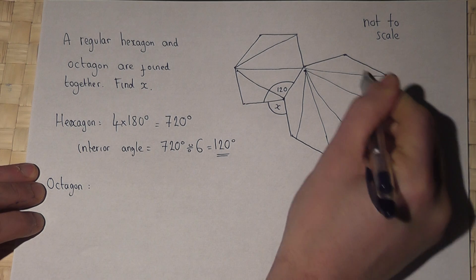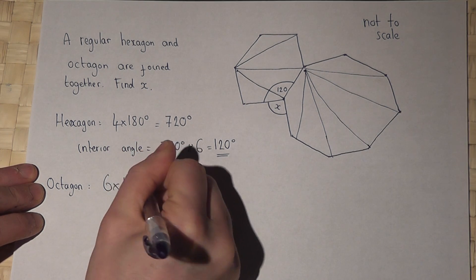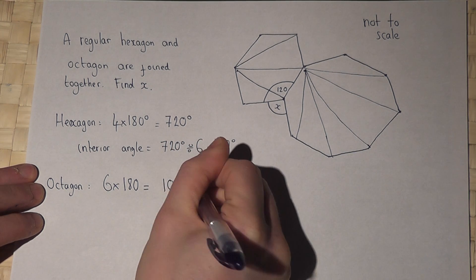One, two, three, four, five, six. So six lots of 180 is 1080 degrees.